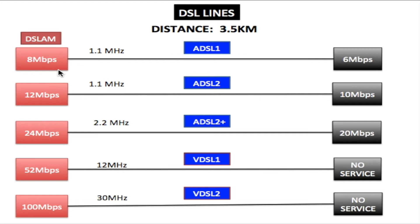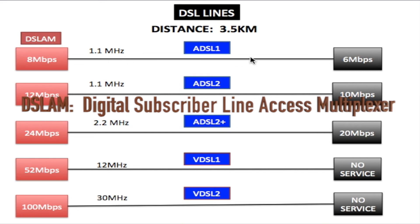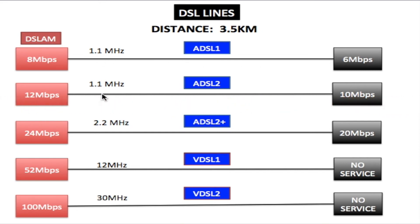With DSL lines, the greater the distance the more signal loss on the line. We are using twisted pair cable, and the further the modem is from the DSLAM card, the greater the loss will be. The higher the frequency, the greater the loss as well — so with high frequencies the line has to be shorter.